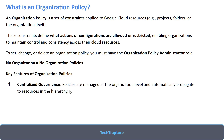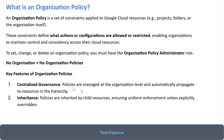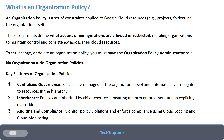Key features of organization policy include centralized governance and inheritance. Organization policy can be created at the organization, folder, or project level and is automatically inherited downward. If you create an organization policy at the organization level and you have a hundred folders, the policy is automatically applied to all of them and further inherited to all projects within those folders.